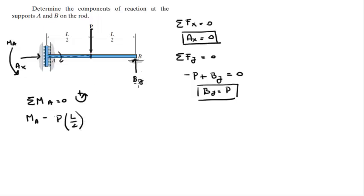But we know that By is equal to P, therefore - and all of this is equal to 0, of course - therefore, the moment minus P times L over 2 plus P times L is equal to 0, which means that the